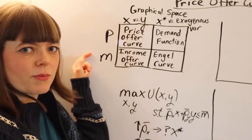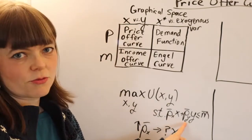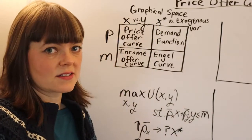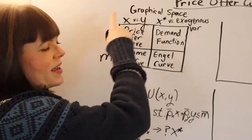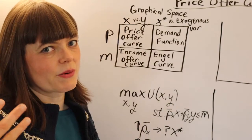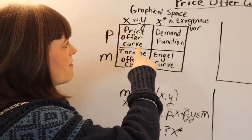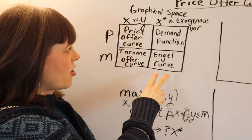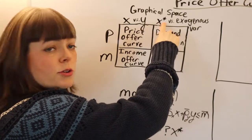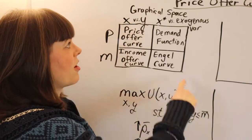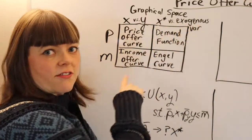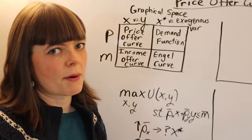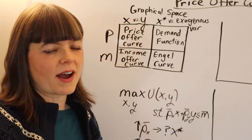There are basically two exogenous variables to change: price and money. We're going to look at them on different graphical spaces. The x-y space — where we graph our budget constraint and indifference curves — is going to make up the space of price offer curves and income offer curves. Then our demand function and Engel curve are derived from each of these, showing the optimal choice, x-star, versus the exogenous variable we're changing, so we've graphed every single possible response to a different price or income.